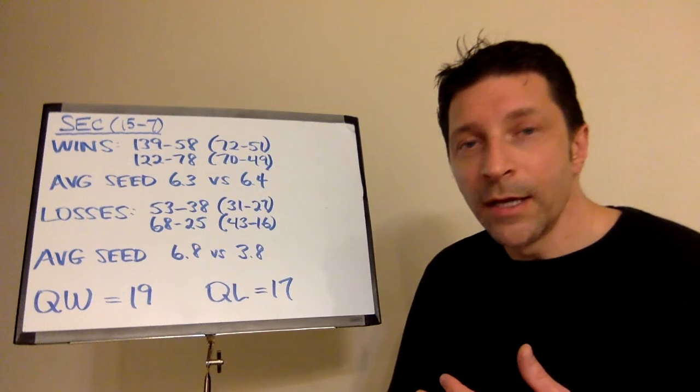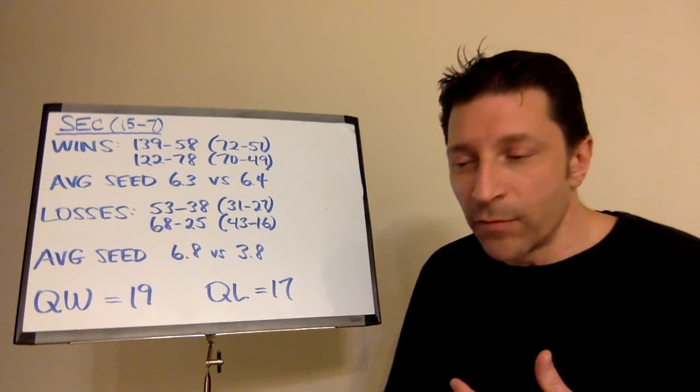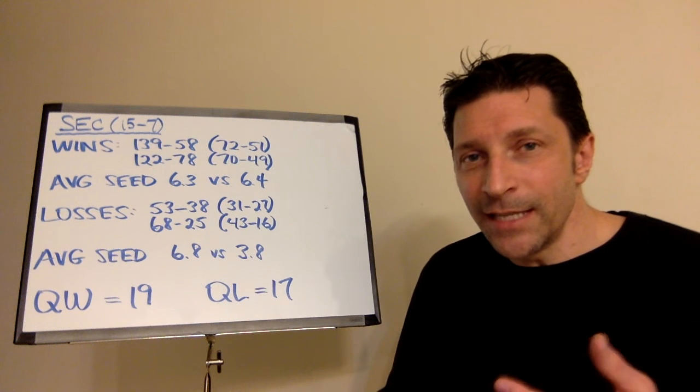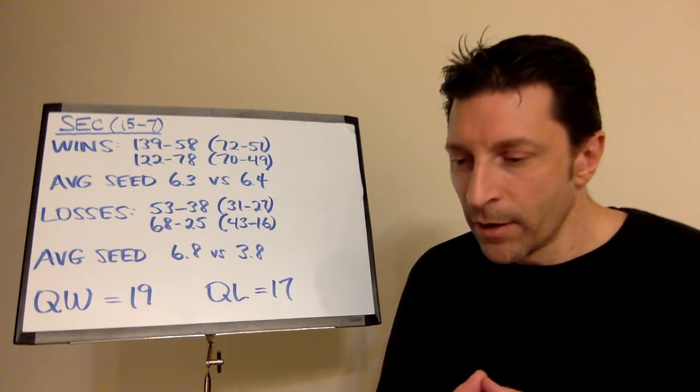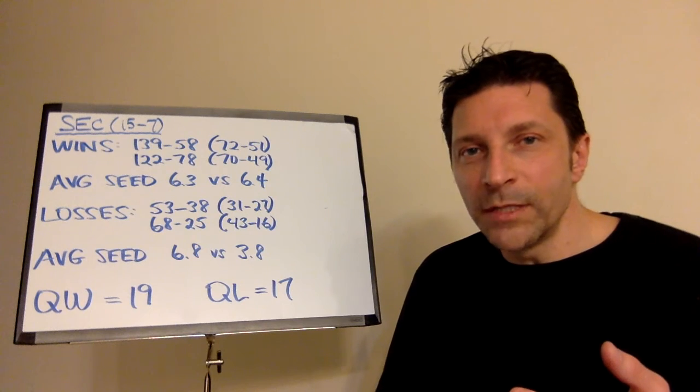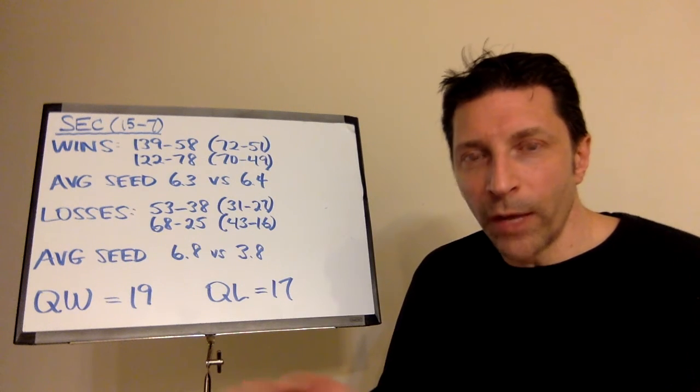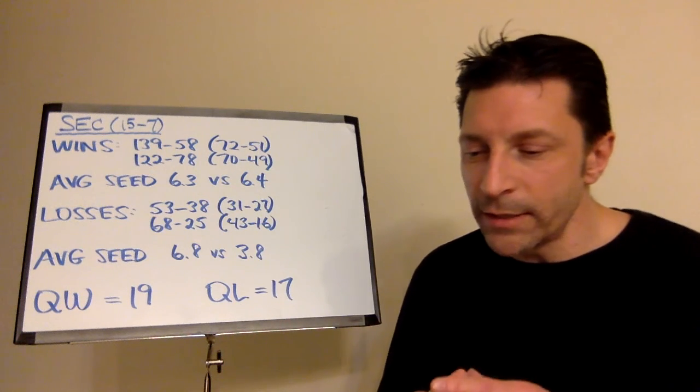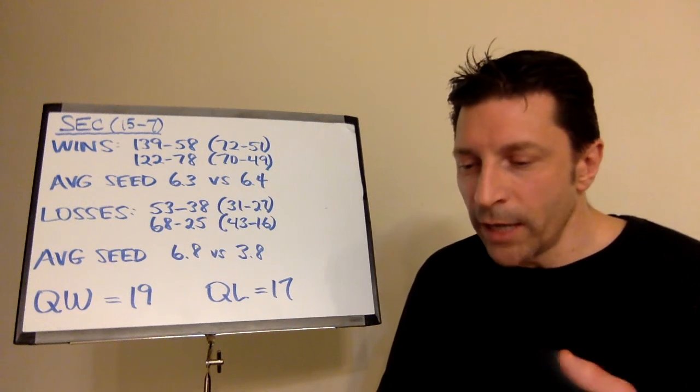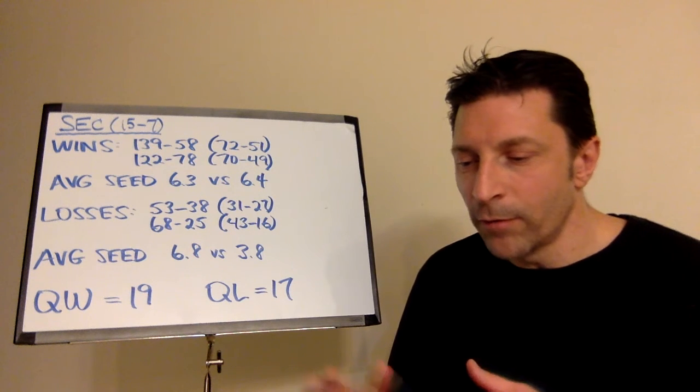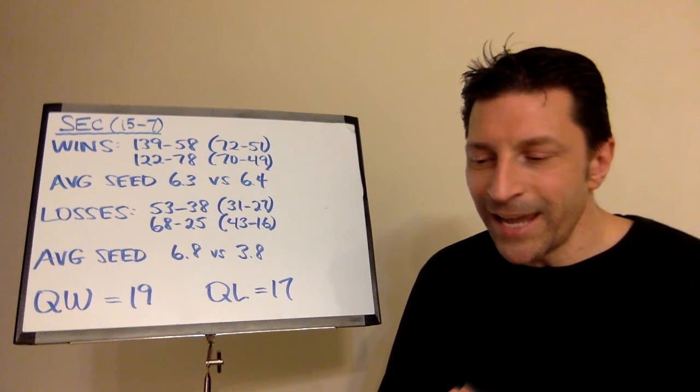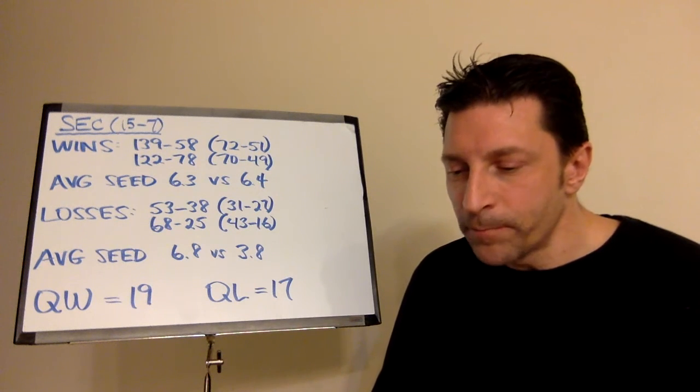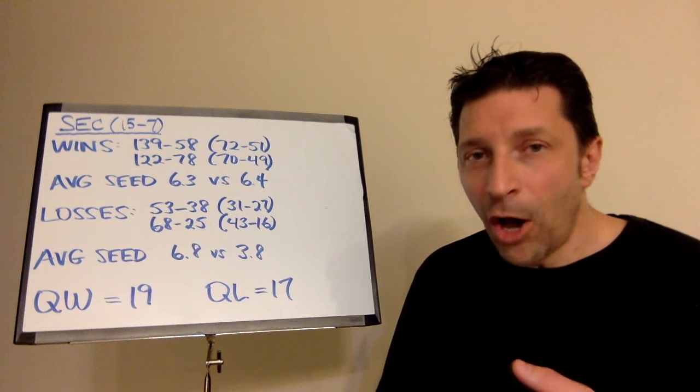So, for the SEC in the wins, Bama won 3 of those out-of-conference games. They defeated a 1 seed in Clemson, a 1 seed in Michigan State, and a 6 seed in the Big 10 in Wisconsin. Ole Miss defeated Oklahoma State. Throttled them in the Sugar Bowl. Ole Miss is a 3 seed. Oklahoma State's a 2 seed. The other wins for the SEC. Arkansas over Kansas State. LSU over Texas Tech. Texas A&M over Arizona State. Mississippi State defeated North Carolina State.